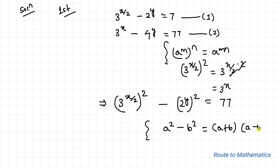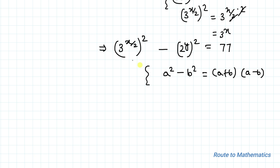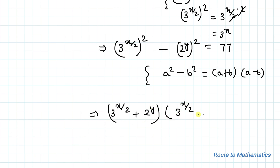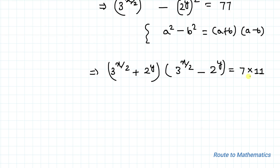We use the algebraic identity a² − b² = (a + b)(a − b), letting a = 3^(x/2) and b = 2^y. This gives (3^(x/2) + 2^y)(3^(x/2) − 2^y) = 77, which can be written as 7 × 11. Note that both 7 and 11 are prime numbers.